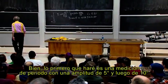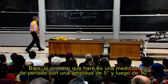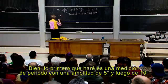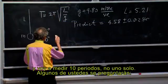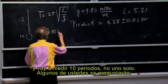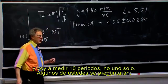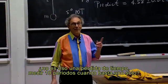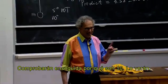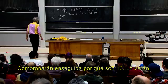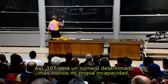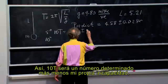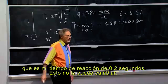I'm going to first make a period measurement at five degrees and then at ten degrees amplitude. And I'm going to measure ten periods, not one. Some of you may think, isn't that a waste of time to do ten periods if you can get away with one? You will very quickly see why it is ten. The ten T is then going to be some number plus or minus my own inability, which is my 0.2 seconds reaction time.